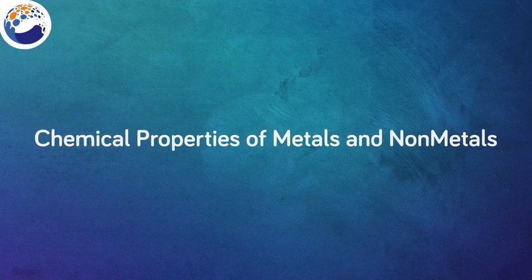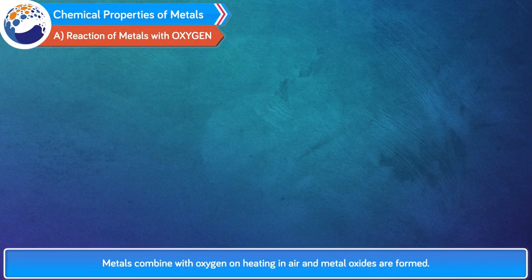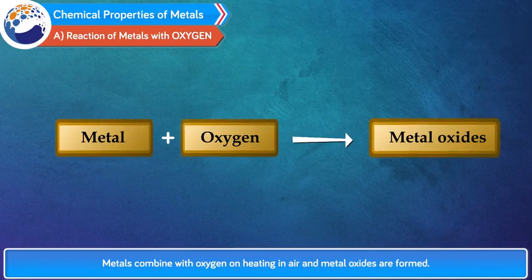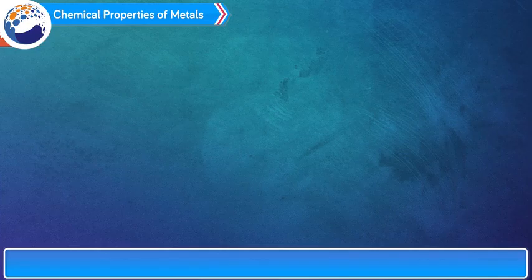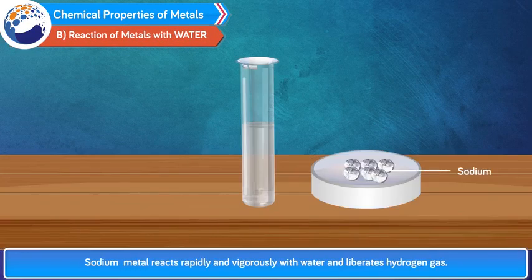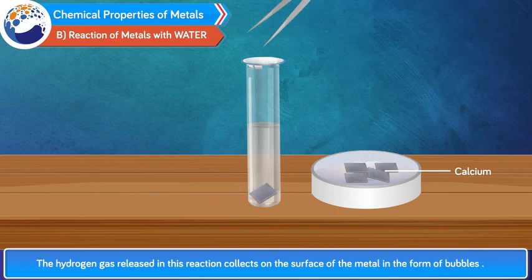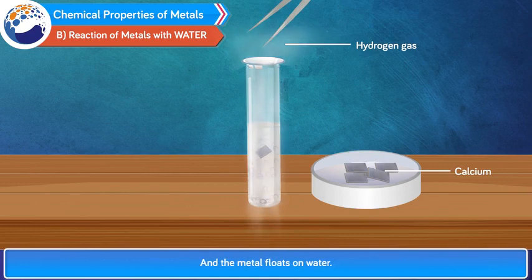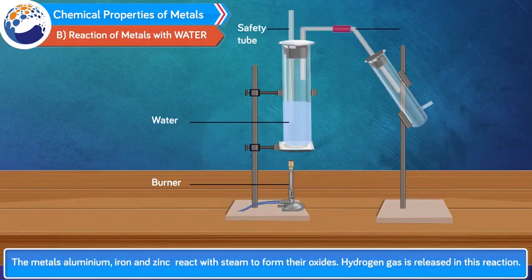Chemical properties of metals. A. Reaction of metals with oxygen: metals combine with oxygen on heating in air and metal oxides are formed. For example, sodium metal combines with oxygen in the air even at room temperature and forms sodium oxide. B. Reaction of metals with water: sodium and potassium react rapidly and vigorously with water and liberate hydrogen gas. Calcium reacts with water slowly and less vigorously. The hydrogen gas released collects on the surface of the metal in the form of bubbles and the metal floats on water. Aluminium, iron and zinc do not react with cold or hot water, but they react with steam to form their oxides.